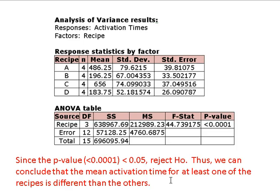We conclude that the mean activation times for at least one of the recipes is different than the others. Notice that this hypothesis test does not determine which recipe has the longest activation time — it just says at least one of the activation times is different than the others. To determine which ones differ, we have to conduct multiple comparisons.